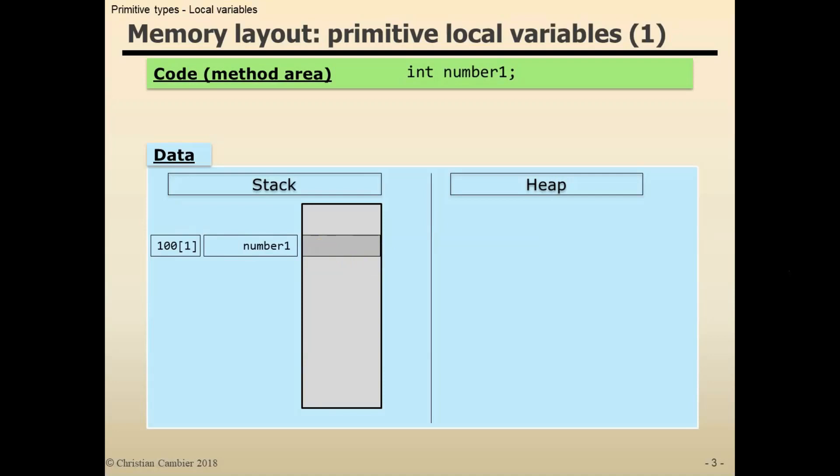What do the other tags mean? Number1 and this 100 notation. Number1 is actually the name or label of the variable, and the 100 notation represents its unique address or location of that variable in stack memory.